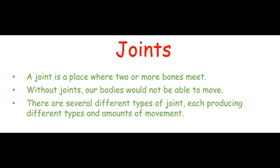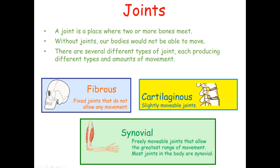If we classify our joints into three particular classifications, we look at them as being fibrous, cartilaginous, or synovial. Fibrous joints are fixed and don't allow any movement. We find these in areas such as the cranium — your skull isn't just one big solid bone mass, it's lots of plates, a bit like tectonic plates that are joined together. We don't want those to move because it would be pretty dangerous.